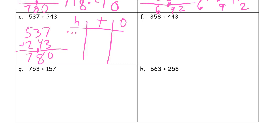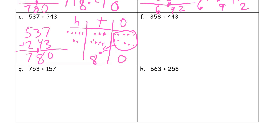Chip model: five hundreds, three tens, seven ones. The two hundred forty-three is two hundreds, four tens, and three ones. This seven plus that three is going to make ten — I have to compose a ten. Now when I count all the tens I've got eight tens. Zero ones left over. Count all my hundreds — seven hundred. Seven hundred eighty.